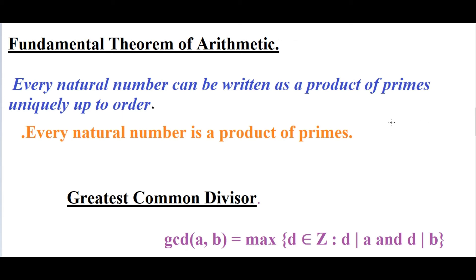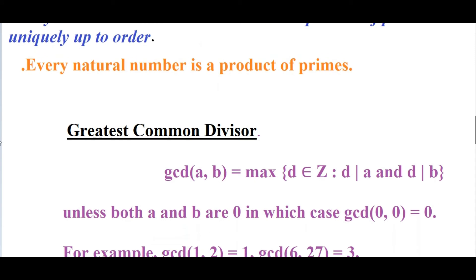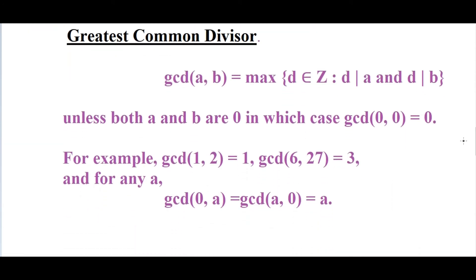I hope you understood this. It is a very basic but important concept from a fundamental point of view and it will help us in solving further problems. The next important thing I want to talk about is Greatest Common Divisor — GCD. We usually call it HCF, Highest Common Factor, in school. These are the same thing. The standard notation is gcd(a, b) where a and b are the two numbers. GCD means the maximum value of d such that d divides a and d divides b.